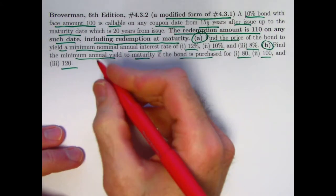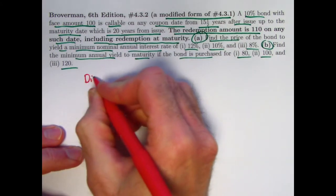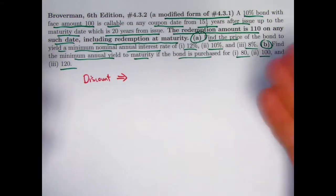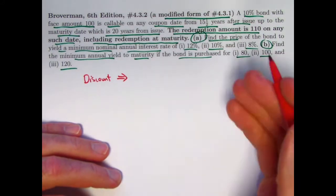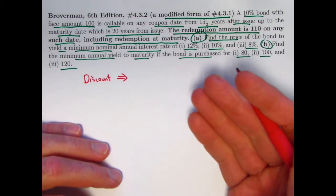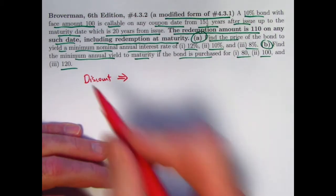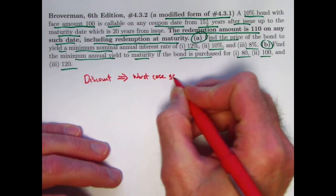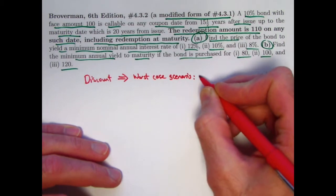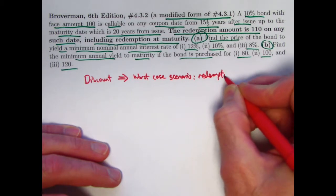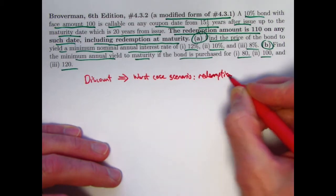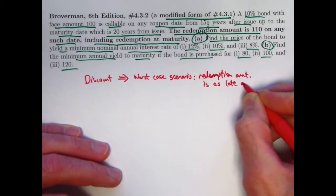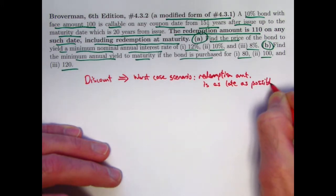If the bond is purchased at a discount, and if it's callable, and if the redemption amount is the same no matter when it's redeemed, then the worst-case scenario for you, the investor, is to assume that the redemption amount is paid as late as possible when the bond is bought at a discount. Worst-case scenario is that the redemption amount is as late as possible.